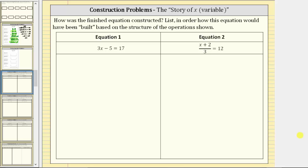In this exercise, we will describe the construction of equations using what's called the story of x or the story of the variable. How was the finished equation constructed? List in order how this equation would have been built based on the structure of the operations shown.